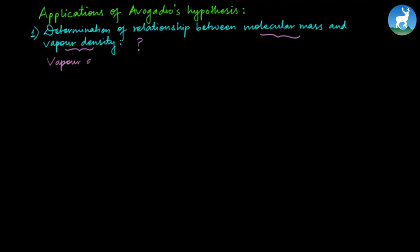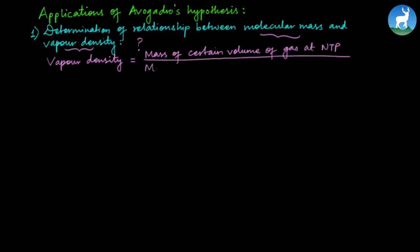What is vapor density? Vapor density is the mass of a certain volume of gas at NTP divided by the mass of the same volume of hydrogen at NTP. This means we find the mass of a fixed volume of gas and compare it to the mass of the same fixed volume of hydrogen.